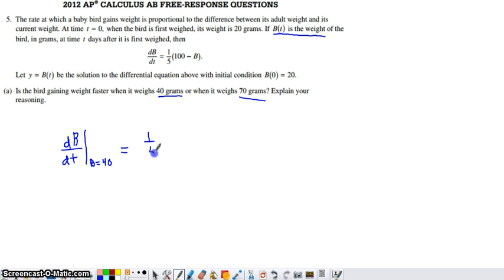And that's going to be one-fifth times 100 minus 40. So that'd be one-fifth of 60. And then one-fifth of 60 is going to be 12.